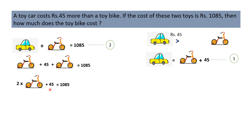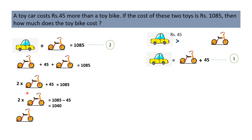The value of one addend is known to us — that is 45. The sum is 1085, and we have to find the missing addend. We will subtract 45 from 1085 to get the value of 2 toy bikes. So, 2 toy bikes = 1085 minus 45 = 1040. The cost of one bike is 1040 divided by 2, that is Rs.520. The cost of the toy bike is Rs.520.